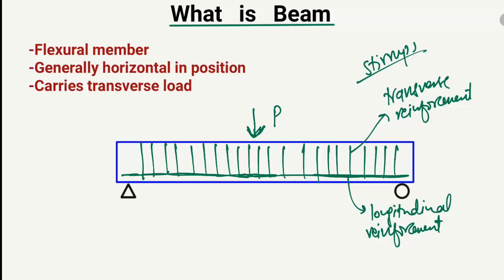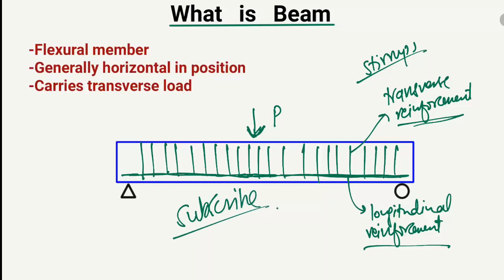So there are two different reinforcements: one laid along the longitudinal axis of the beam, known as longitudinal reinforcement, and the other provided in the transverse direction, known as transverse reinforcement. Don't forget to subscribe to our channel for daily civil engineering videos. Thank you for watching.